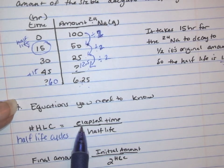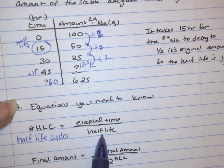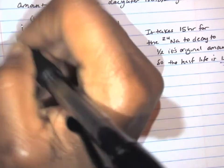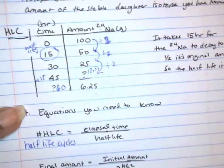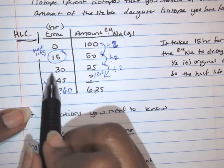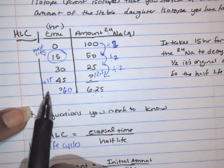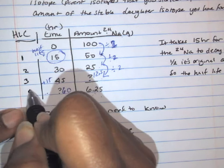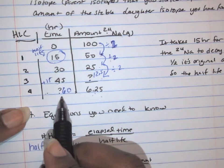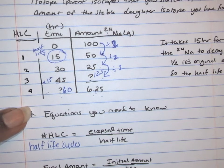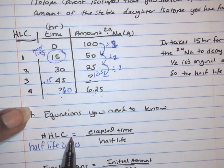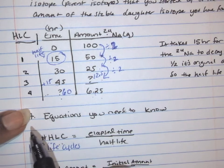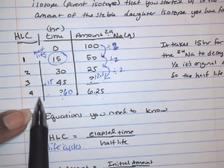The first equation is Half-Life Cycles, which equals the total elapsed time divided by the Half-Life. Essentially, you're counting the number of Half-Lives that have passed. For example, if I wanted to figure out how many Half-Life Cycles occurred at 60 hours with a 15-hour Half-Life, I would count: one, two, three, four — so four Half-Life Cycles have passed. The number of Half-Life Cycles tells you how many Half-Lives have elapsed.